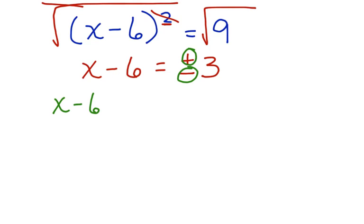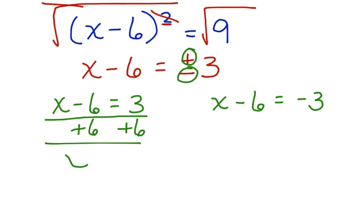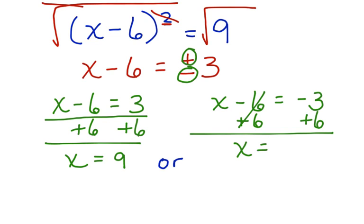x minus 6 equals 3, and x minus 6 equals negative 3. We are going to have two solutions that will work in this equation. Let's solve for this equation first. We add 6 to both sides and x is equal to 9. Or, on this side we add 6 to both sides and x is equal to positive 3. So our answer is that x can be equal to 9 or x can be equal to positive 3.